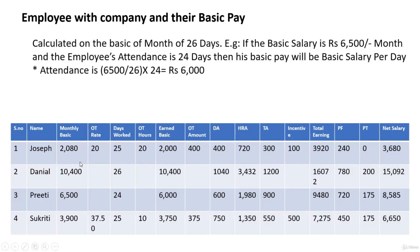The basic pay of an employee is calculated based on the months they are present, using a base of 26 working days rather than 30. For example, if the basic salary is ₹6,500 per month and the employee attended 24 out of 26 days, then basic pay = (6,500 ÷ 26) × 24 = ₹6,000.